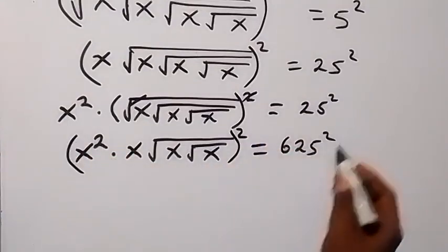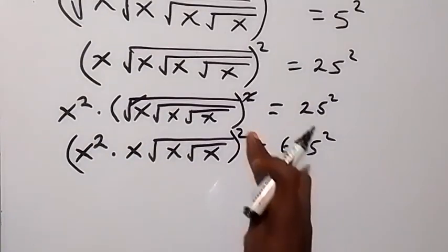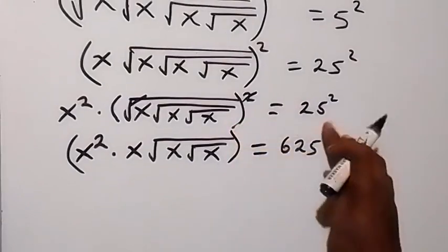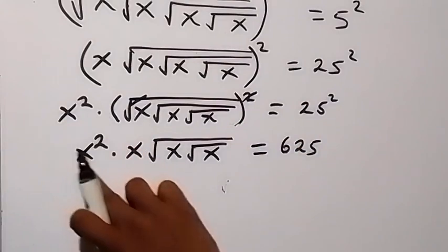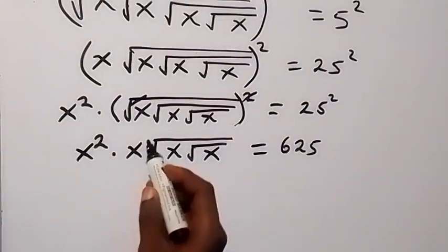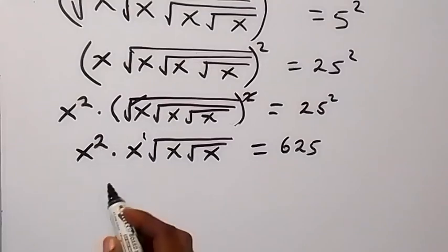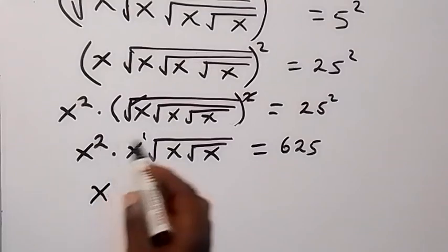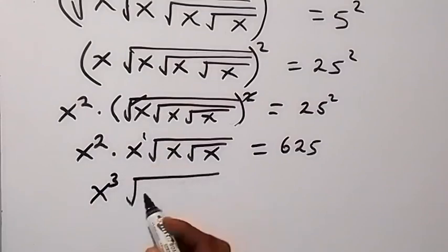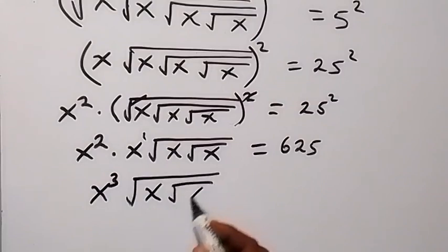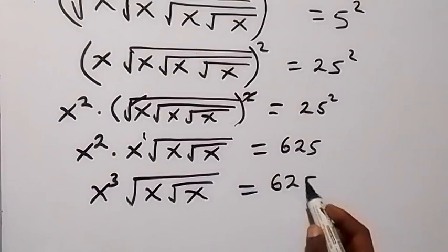Before we square again, let's bring this together. This x is x raised to power 1, so from the law of indices we can write it as x raised to power 2 plus 1, that's x raised to power 3. Then root x times root x equals 625.